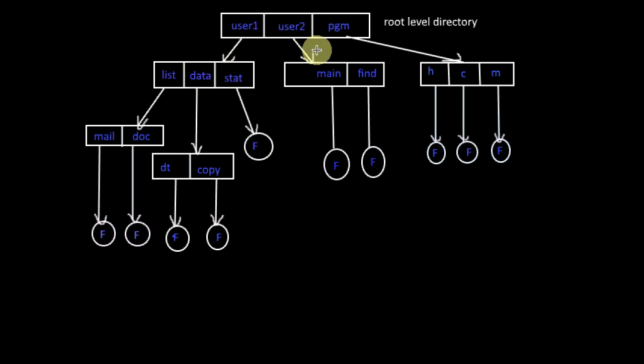Now user2 also needs access to this file. In the tree structure directory, we know that user2 should use either this path name or he should change his directory to be user1's directory. But here the requirement is the second user should be able to access this file from his own directory.